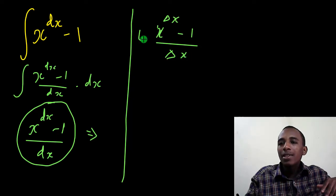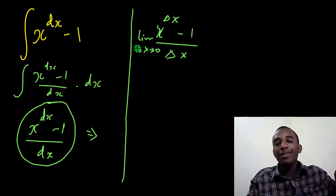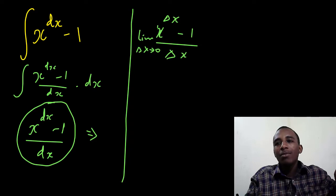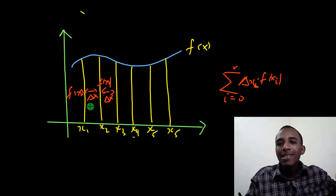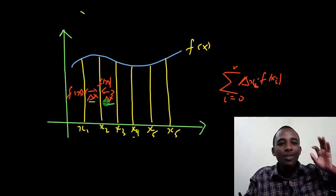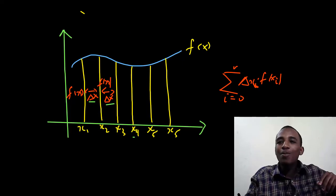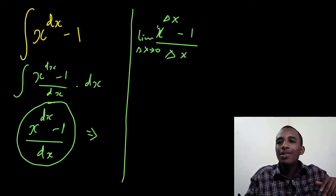And if I take the limit as delta x tends to 0, why do I take this limit? Well, we try to make these segments, the delta x's, as very thin as possible, approaching 0. That's why I take the limit as this tends to 0.